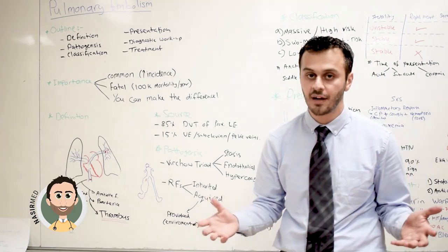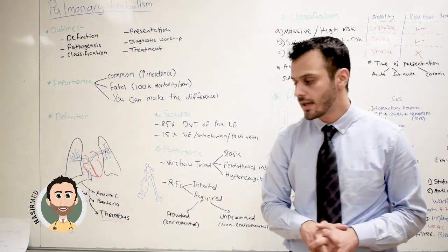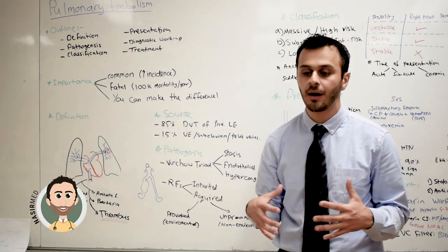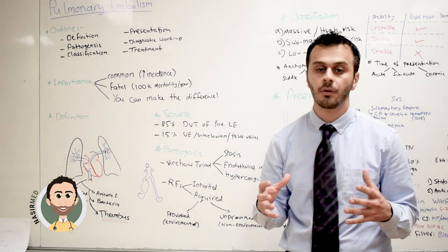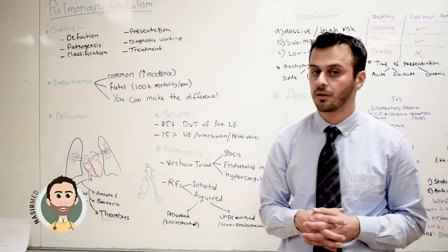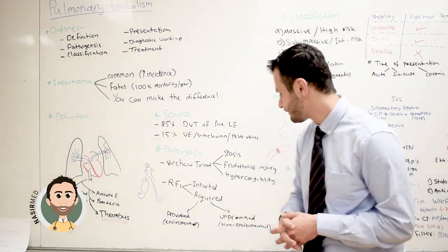Or patients who have inherited hypercoagulability disorders, such as Factor V Leiden or protein C and S deficiency — their body is more prone to developing clots than normal patients.